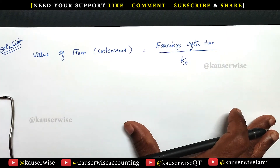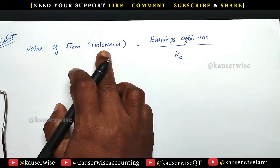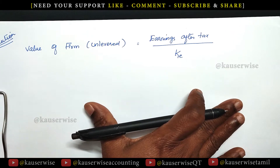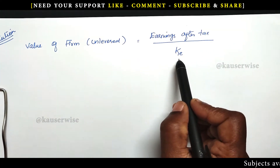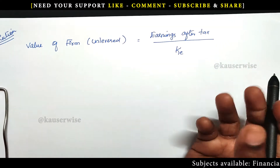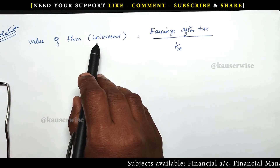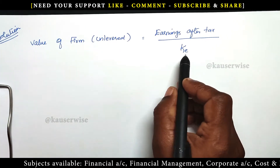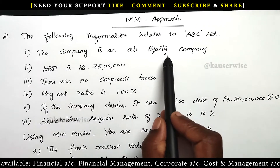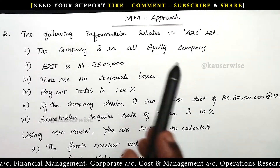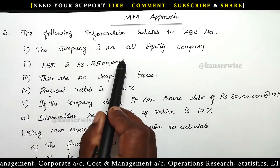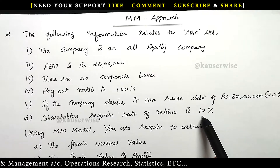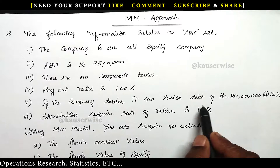Now let's see the solution. First, we need to find out the value of the unlevered firm — unlevered means only equity, there will be no debt. This model is where there are no corporate taxes. The formula is earnings after tax divided by cost of equity. Here there is no tax, so whatever EBIT belongs entirely to equity shareholders because there is no debt and therefore no interest. So the formula is EBIT divided by KE. EBIT is 25 lakhs divided by cost of equity of 10%. So 25 lakhs divided by 0.10 gives 2 crore 50 lakhs. This is the value of the unlevered firm.